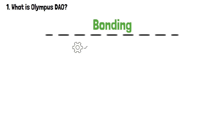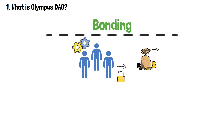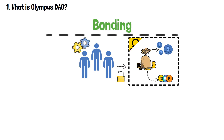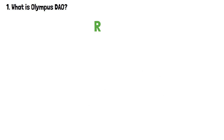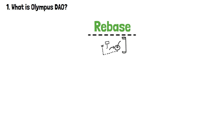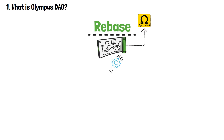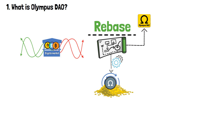Firstly, bonding refers to the process where participants lock their assets, such as stablecoins or cryptocurrencies, within the Olympus DAO protocol in exchange for OM tokens. By bonding their assets, participants contribute to the liquidity and stability of the ecosystem, supporting the value of OM as a reserve asset. Next, rebase represents a unique mechanism employed by Olympus DAO to automatically adjust the supply of OM based on market price movements.